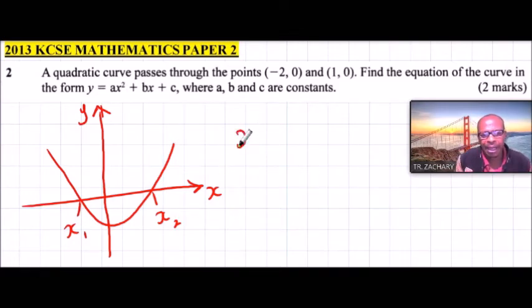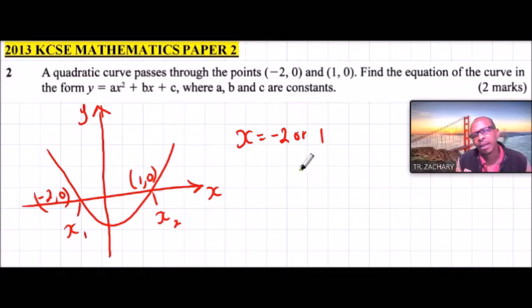And so, we can say x is equals to, that is, because now the points here are, this is 1 and 0, and this is minus 2 and 0, we can say the value of x is either minus 2 or 1. And therefore,